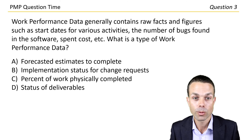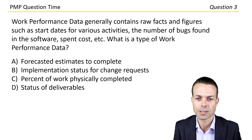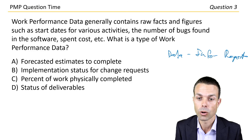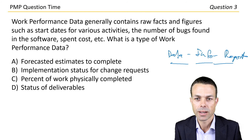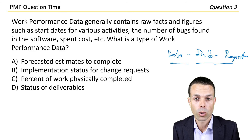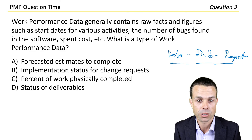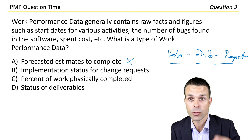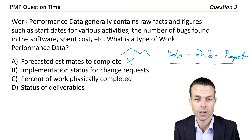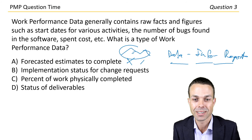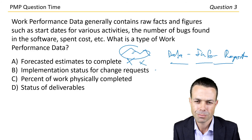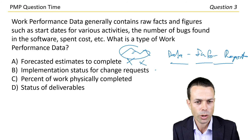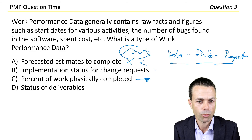Let's look at question three. Work performance data generally contains raw facts and figures. Data goes into information, which goes into reports. The data itself is things like start dates, raw information, just pure facts — number of bugs, spent costs, actual cost. What is a type of work performance data? Forecasted estimates to complete — not that one, because you need to measure it against something else. Percent of work physically completed is a measure — that raw measure of physical completion. That's very promising.